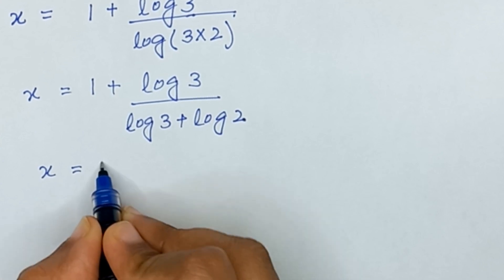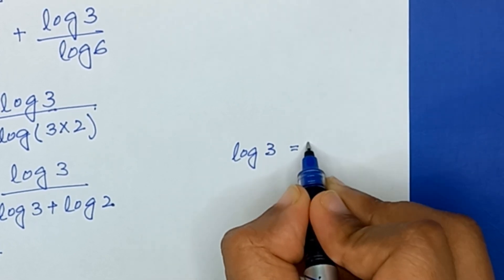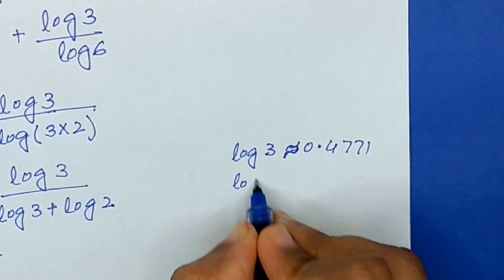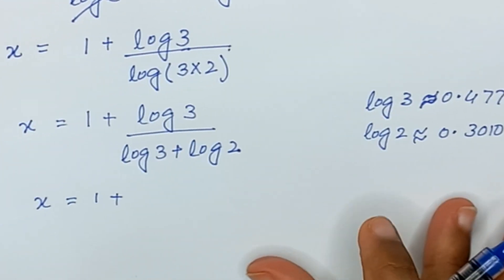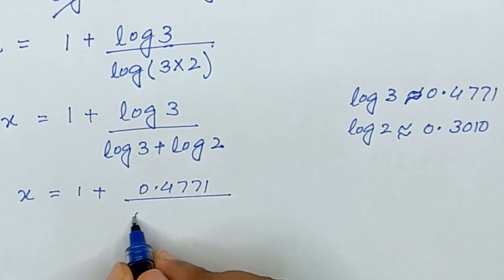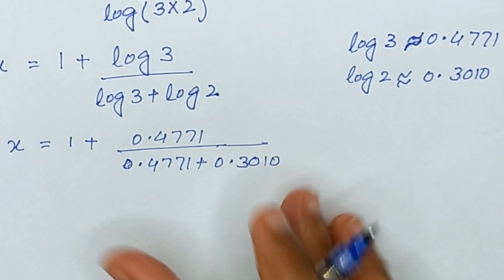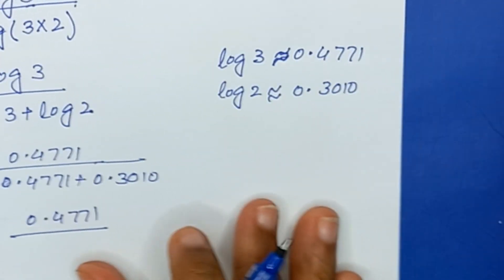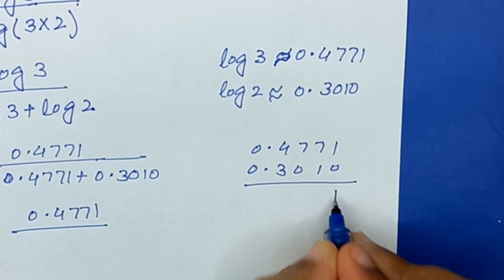Now x equals 1 plus that fraction. The value of log(3) is approximately 0.4771 and log(2) is approximately 0.3010 — these are approximated values. Substituting, we get x = 1 plus 0.4771 divided by (0.4771 + 0.3010).